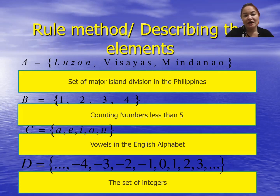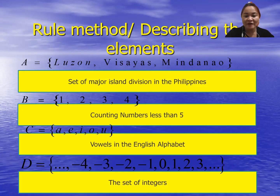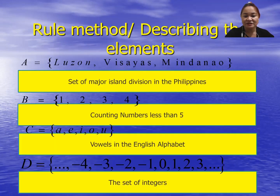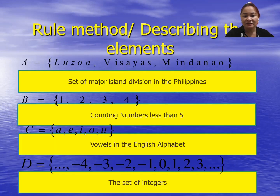Using the rule method: for set A, Luzon, Visayas, and Mindanao — the set of major island divisions in the Philippines, written in sentence form. For set B: counting numbers less than 5. For set C: vowels in the English alphabet. And D: the set of integers.